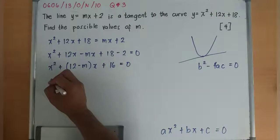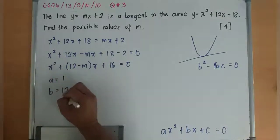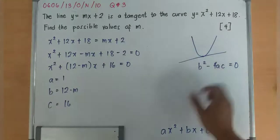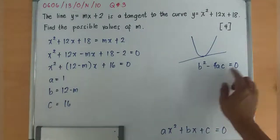Thus, a = 1, b = 12 - m, c = 16. Since I am applying this one, I can change now the b, the a, and the c.